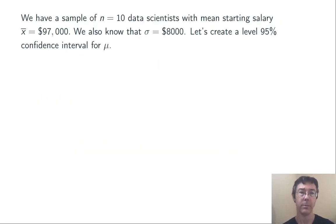Let's continue with our example. We have a sample of n equals 10 data scientists, and their mean starting salary was $97,000. Sample mean. We also know that sigma is $8,000, population standard deviation. Let's create a level 95% confidence interval for mu.